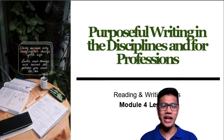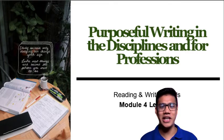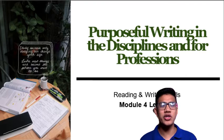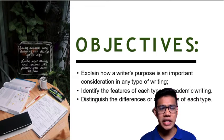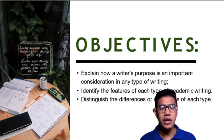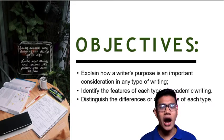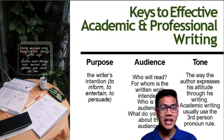Good day, dear Grade 11 students. Welcome to Sir Robert's Lectures on YouTube. This is Sir Robert, your Reading and Writing teacher. This week we proceed with Module 4, Lesson 2: Purposeful Writing in the Disciplines and for Professions. Our objectives are: number one, explain how a writer's purpose is an important consideration in any type of writing; number two, identify the features of each type of academic writing; and finally, distinguish the differences and similarities of each type of academic writing.